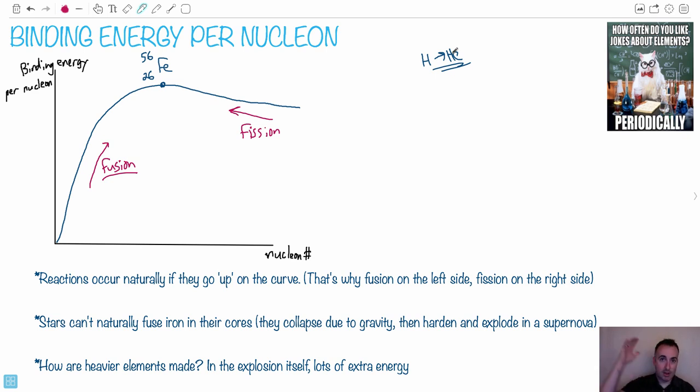If it has iron in its core, it's no longer able to fuse. So that means it's going to collapse. And it turns out it's going to collapse, and through some weird processes, it'll harden and explode into a supernova. And we go into the details in the astrophysics option there.